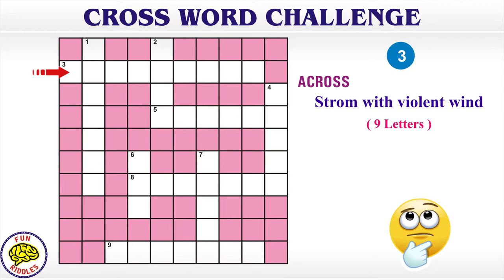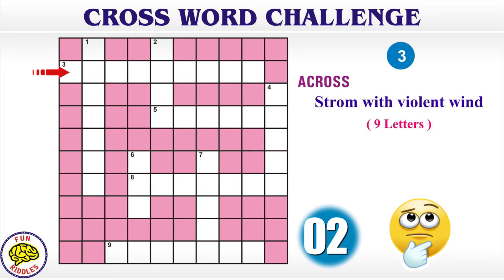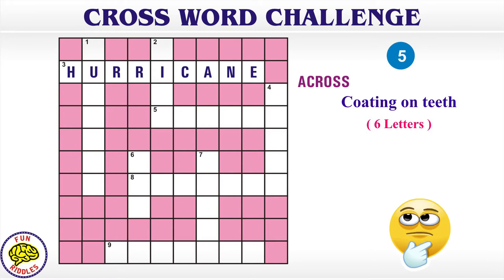3 Across: storm with violent wind, 9 letters. Answer: Hurricane.